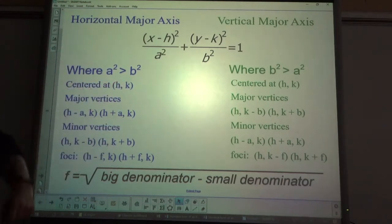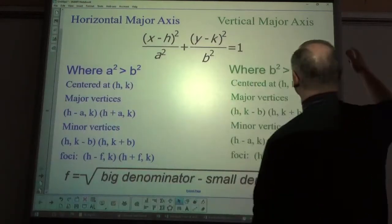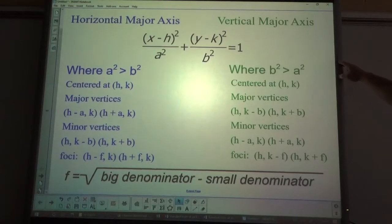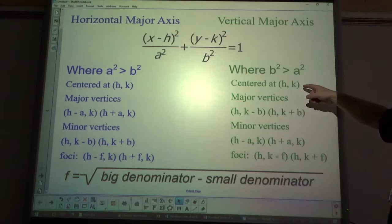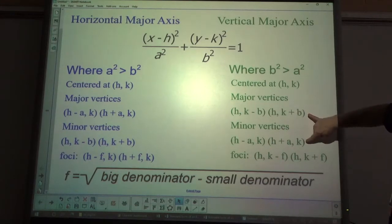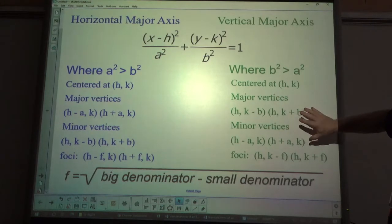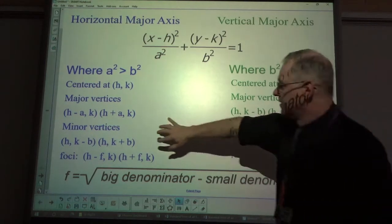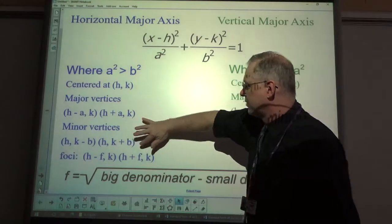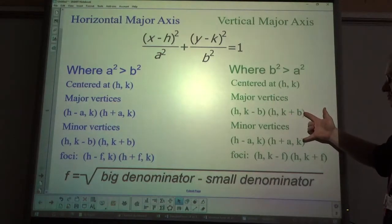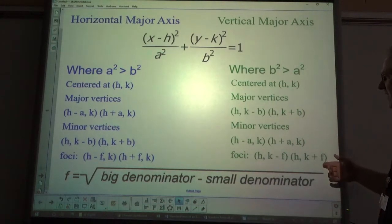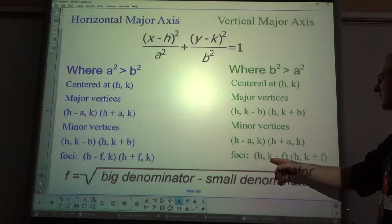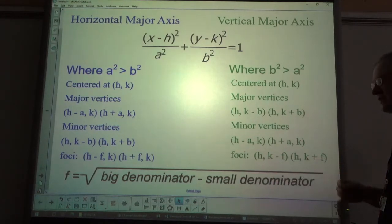On the other hand, if it's a vertical major axis, it's still centered at (h,k), but the formulas for finding the major and minor vertices are switched. The foci become (h, k minus f) and (h, k plus f).